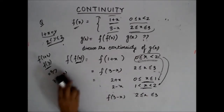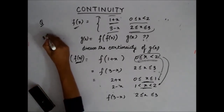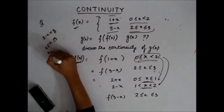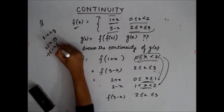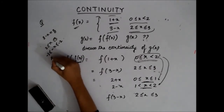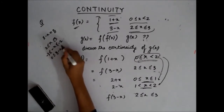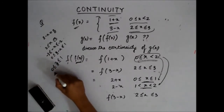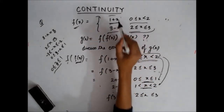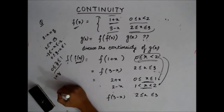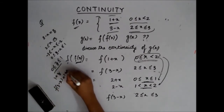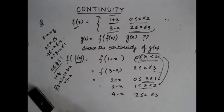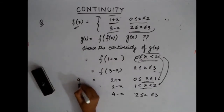When z lies between 0 and 1, f(z) = 1 + z. So f(3 − x) = 1 + (3 − x) = 4 − x for x in [2, 3]. This gives us g(x) fully expressed: g(x) = 2 + x for x in [0,1), 2 − x for x in [1, 2), and 4 − x for x in [2, 3].